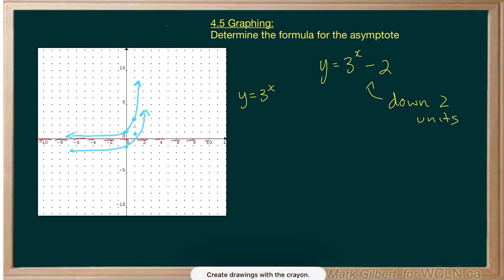And the asymptote will also move down 2 units. So it has equation y equals negative 2. You can see the relationship between these equations and the transformation in the question.